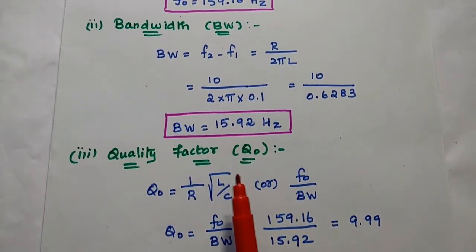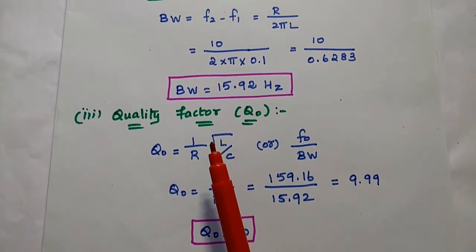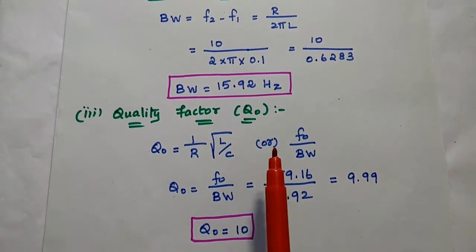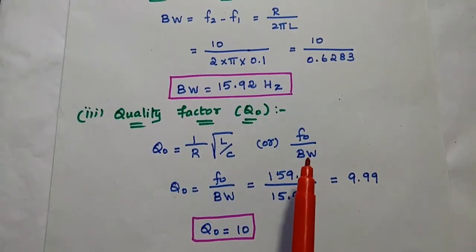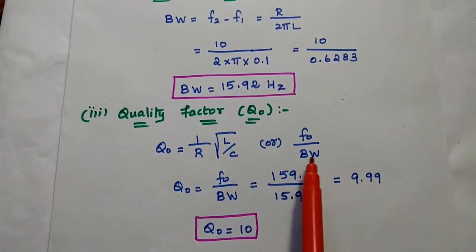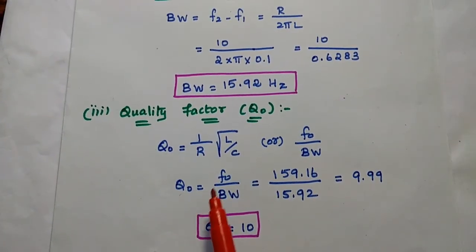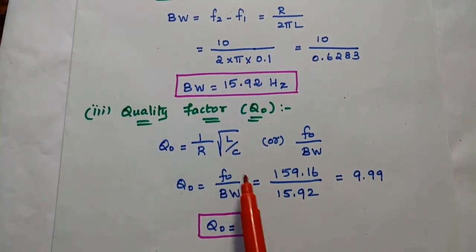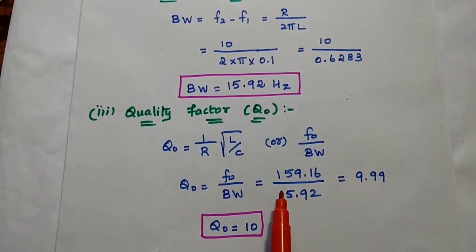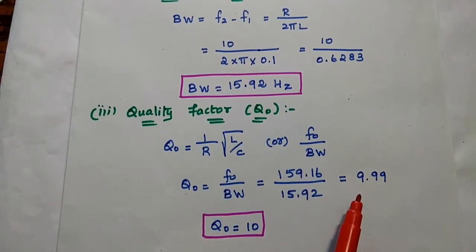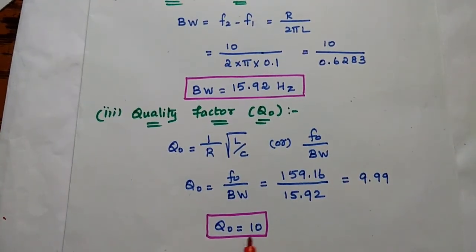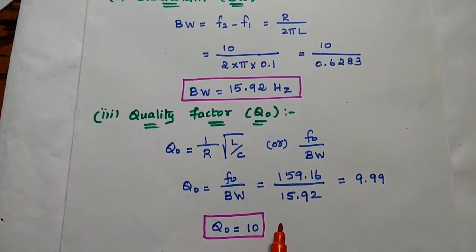Finally, we are going to find out the quality factor. The formula is 1 by R into square root of L by C, or equivalently F0 by bandwidth. Since we have already obtained the resonant frequency and bandwidth, we use the ratio: quality factor equals 159.17 divided by 15.92, giving 9.99, which we simplify to 10. So the quality factor is equal to 10.